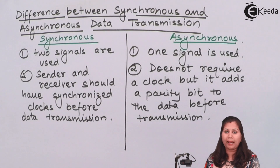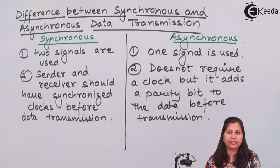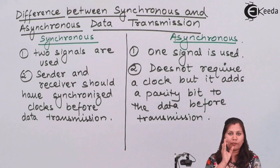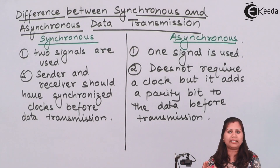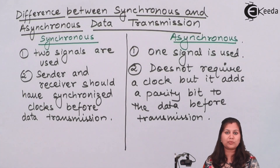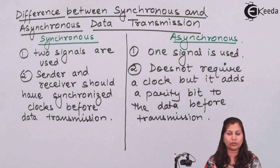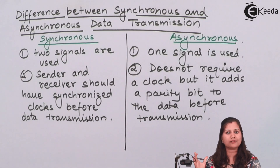In asynchronous transmission, no clock is required, but a parity bit is added to the data before transmission. For example, if we transmit an 8-bit data, start and stop bits are added. The start bit indicates where the data begins and stop bits indicate the end of data. So the start and end of data is indicated by the clock pulse in synchronous, and by start and stop bits in asynchronous.